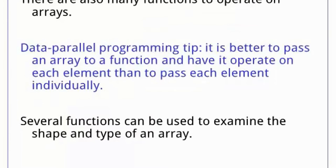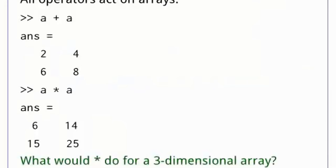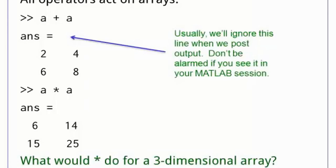In a later episode, we will talk about how to program your own functions. But for now, let's explore some of the built-in functions to examine the shape and type of an array. The simplest functions are arithmetic operators, which operate on arrays in the way you would expect from matrices and vectors. Addition is element-wise, and assumes that the two arrays have the same size. Multiplication is matrix multiplication, and assumes that the inner dimensions agree. As an exercise, see if you can figure out what happens when you multiply two three-dimensional arrays. As a hint, try to see what sizes must match between the arrays.